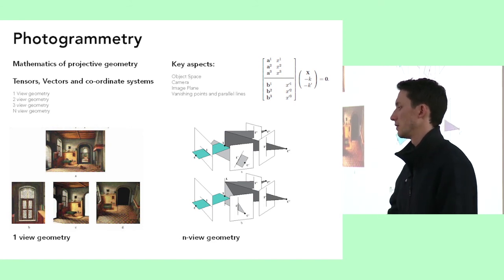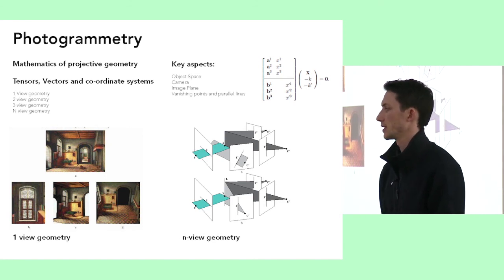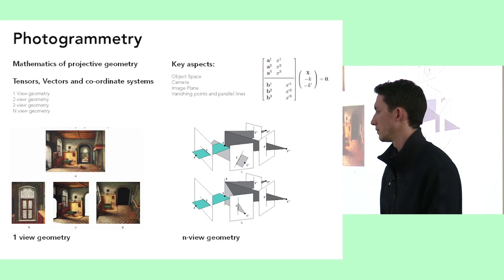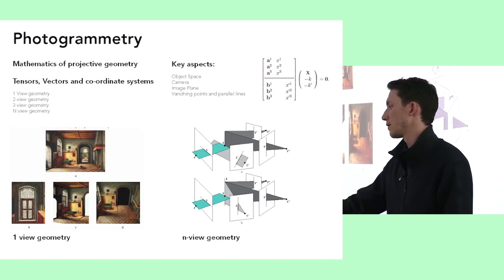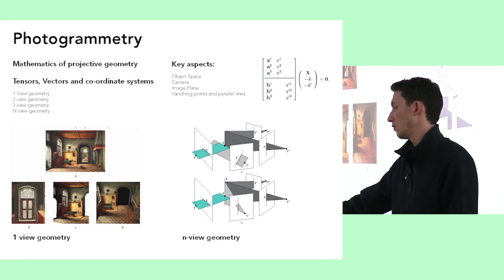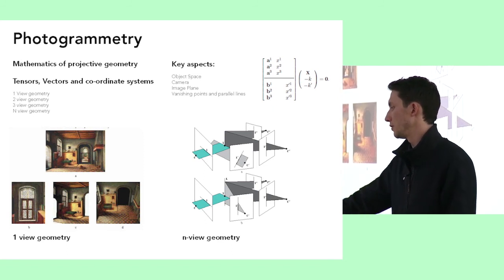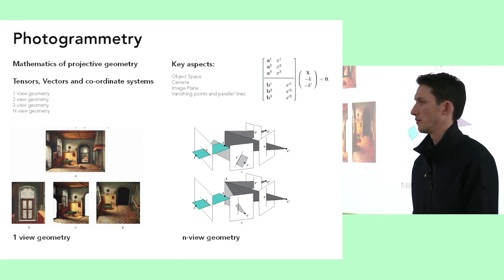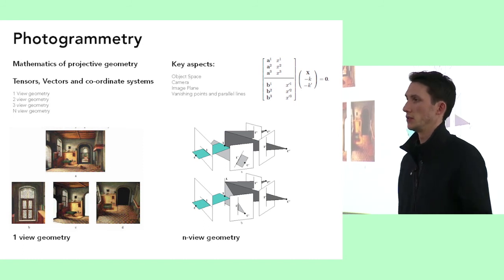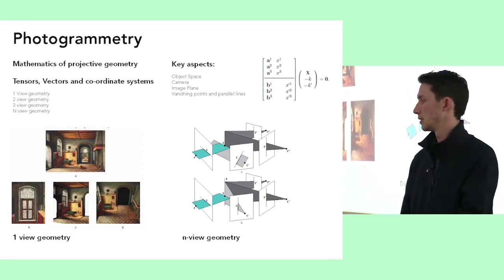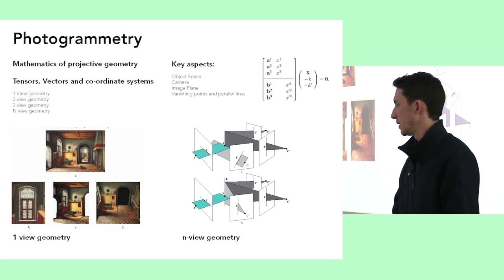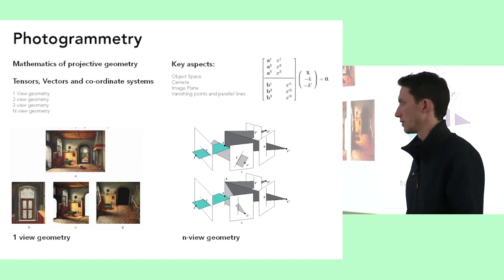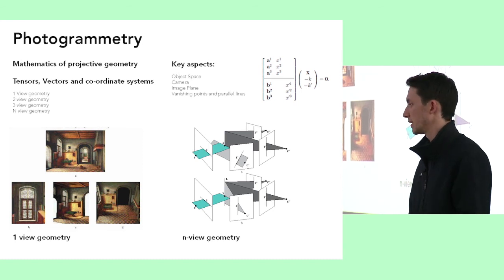The photogrammetry used in architecture is more with what they call an end view — so you have an array of different photos and you stitch them all together. I thought I'd just mention the basis of what it is.